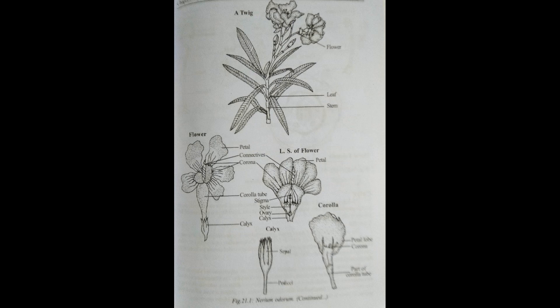First, the habit: herb or shrub, root systems are taproot, stem erect, herbaceous or woody or climbing. Latex vessels and bicollateral vascular bundles are present in the stem.